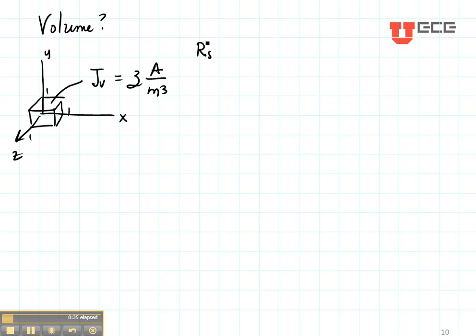The first thing that we do is we write RS. RS is the vector from the origin to a point on my source, my current density. Oh, and I need to give a direction to my current density.